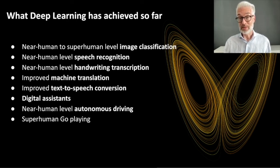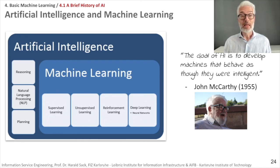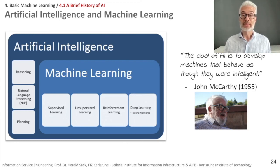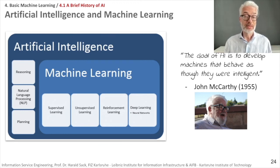However, deep learning and machine learning is only part of artificial intelligence. Artificial intelligence also contains reasoning, natural language processing, and planning. We did natural language processing in the first part of the lecture, and things connected to reasoning — symbolic knowledge representation — in the knowledge graph chapter. John McCarthy, one of the founding fathers of artificial intelligence who coined the term in 1955, said: the goal of AI is to develop machines that behave as though they were intelligent. This does not only refer to machine learning, but also to symbolic knowledge representations and programs that perform reasoning or natural language processing.